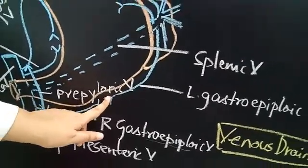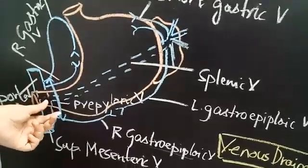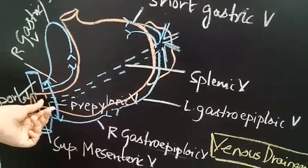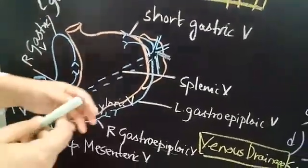This pre-pyloric vein has no corresponding arteries and helps in the identification of the pyloric part of the stomach in living individuals after opening the abdomen.